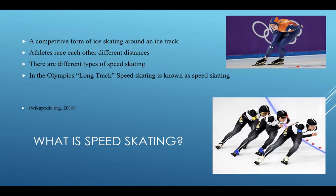Speed skating is a competitive form of ice skating around an ice track. There are different distances and races. For men, there's the 500, 1000, 1500, 5000, and 10,000 meter races, plus a mass start and a team pursuit. For women, it's a little different: 500, 1000, 1500, 3000, and 5000 meter, plus a mass start and team pursuit. There are also different types of speed skating.